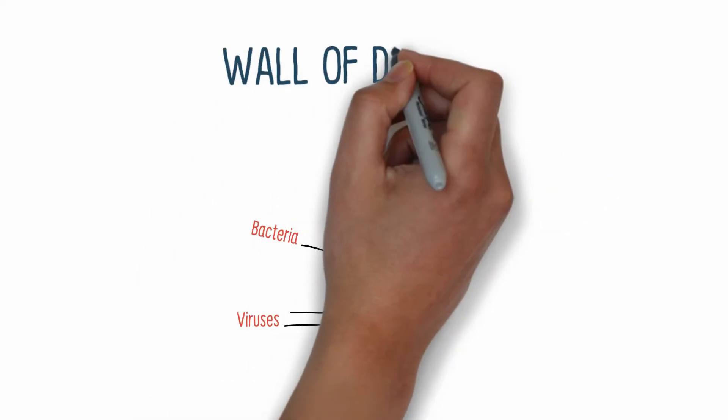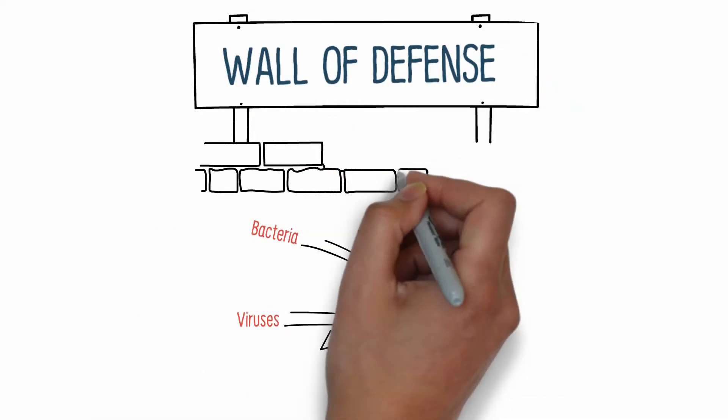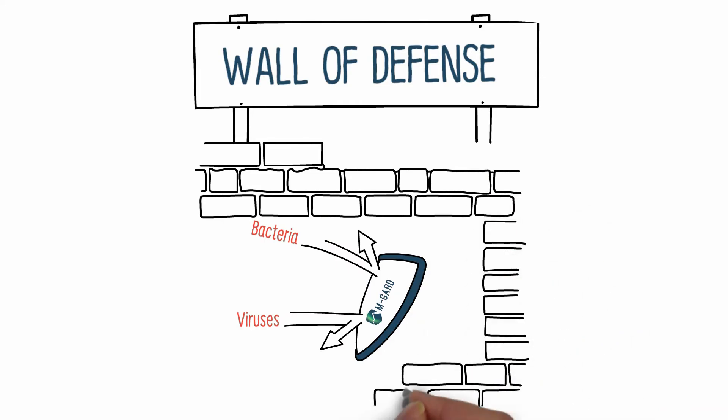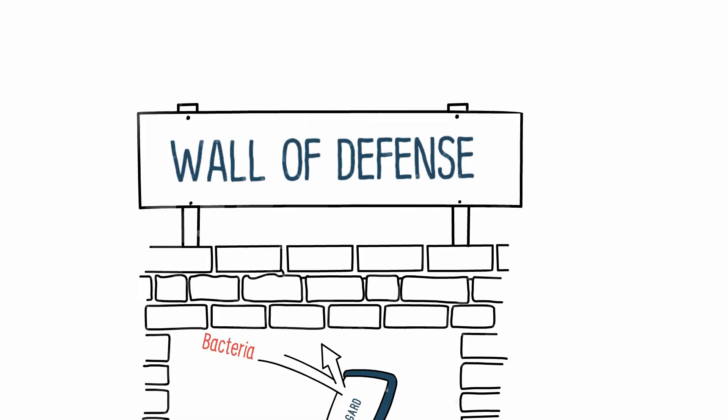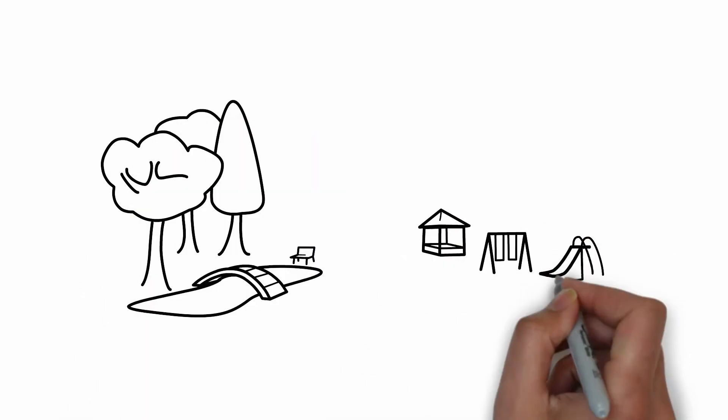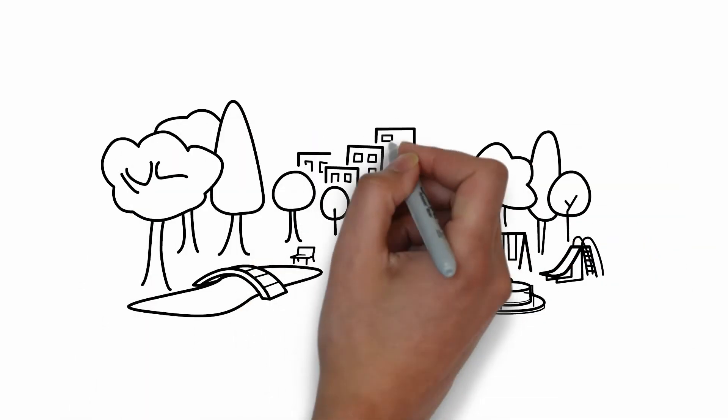This healthy fiber builds a wall of defense by enhancing your natural immune function, offering benefits that can't be achieved through food alone. M-Guard is vegan, all-natural, and most importantly, it works.